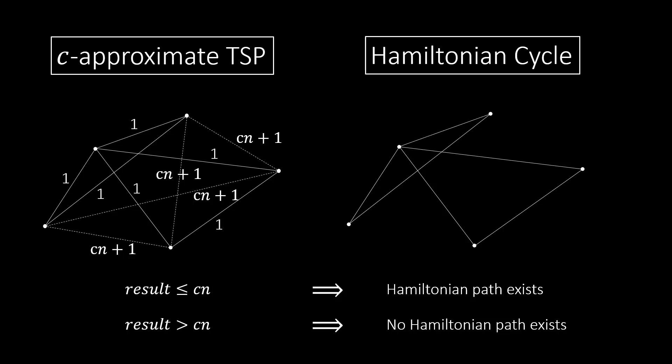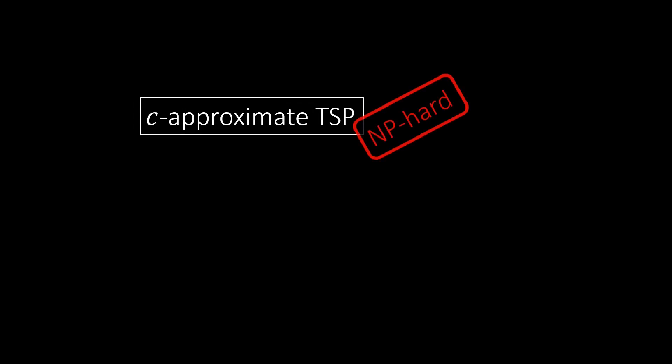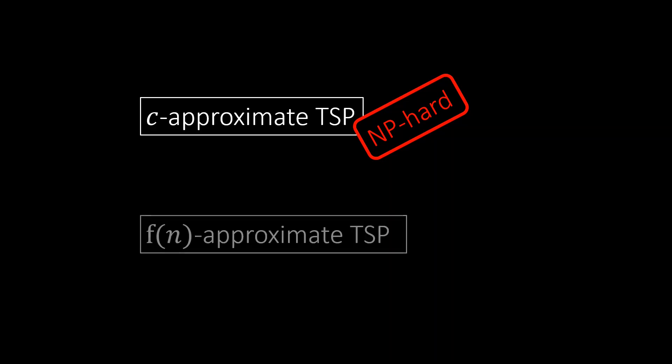Hence, we can solve Hamiltonian cycle by approximating TSP. And since Hamiltonian cycle is NP-hard, so is approximating TSP. This finishes the proof. So we now know that C approximating TSP is NP-hard. But we could still hope to approximate TSP up to a factor that depends on n. Unfortunately, this is NP-hard too. The proof shown in this video also works for any function f of n that can be computed in polynomial time. You can replay the proof to convince yourself.